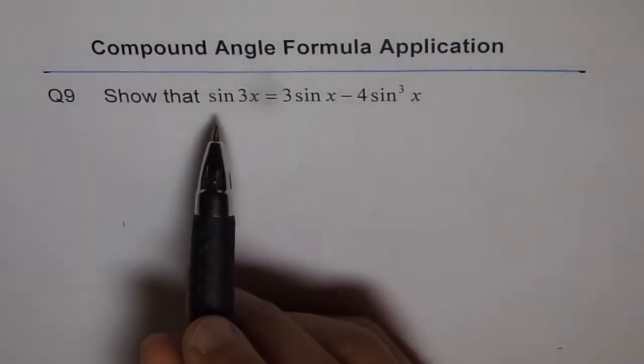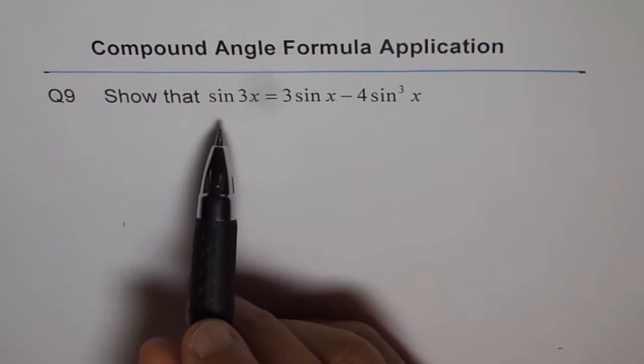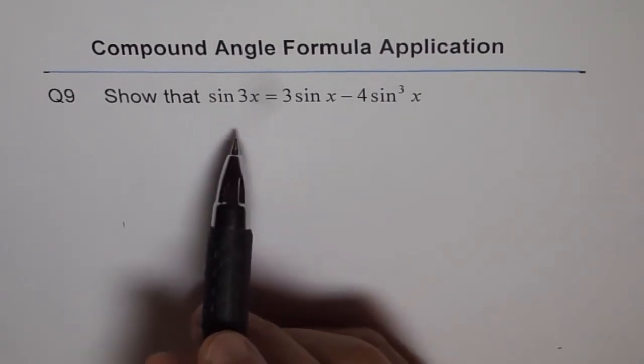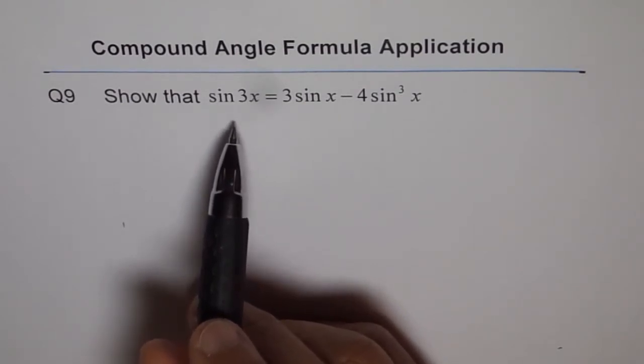Well, we can always write sine 3x as sum of 2x and x. Now if I do that, then I need to expand sine 2x plus x, which will be sine 2x cos x plus cos 2x sine x.